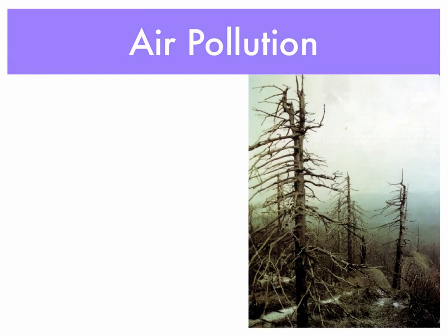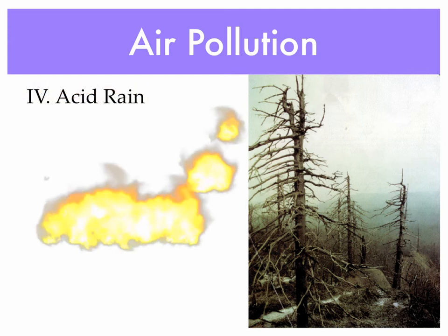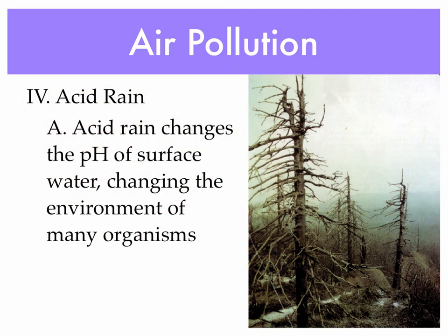Another type of air pollution that we're probably more familiar with is acid rain. Acid rain is pollution, and one of its main effects is it changes the pH of the water, which changes the environment of many organisms. As we can see in the picture, it also changes the pH of the ground it rains on and can kill plants. So acid rain actually has an impact on both water and soil.